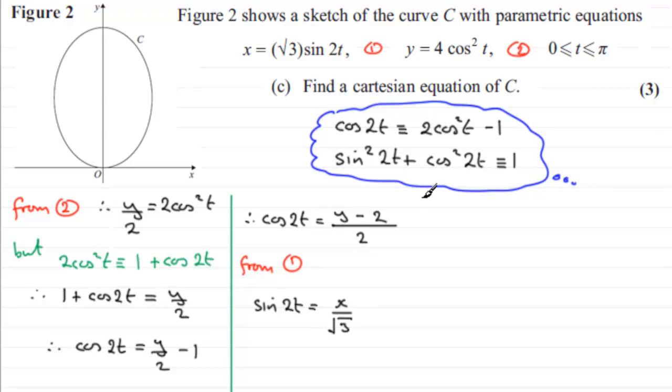Now what I know is then this identity down here. Let's just put that down. We can say that since sine squared 2t plus cos squared 2t is going to be equal to 1, then from these two results that I've got here and here...